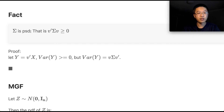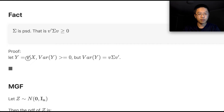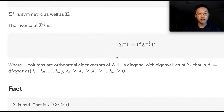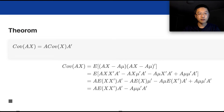The covariance matrix sigma is positive semi-definite; we know its quadratic form is greater than or equal to zero. Why is this true? Let's define y as any vector v-transpose times random variable x — that is just the inner product of these two vectors. Because y is a one-dimensional random variable, we know its variance is definitely greater than or equal to zero. But the variance of y is just v times sigma times v-transpose, which follows from the covariance theorem we just derived.